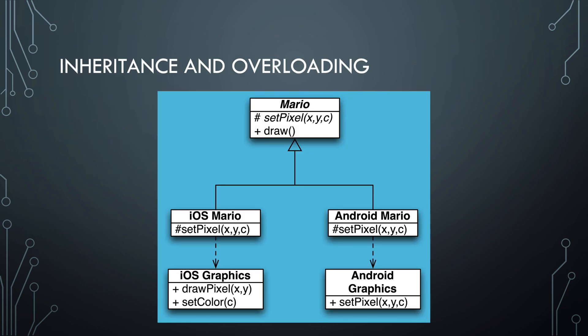Let's redesign it and solve this. In the new version, the abstract Mario class has an abstract method called setPixel. The abstract class contains the draw method that uses setPixel to draw the character onto the screen. Then iOS Mario and Android Mario each provide a version of setPixel that uses the respective platform. The setPixel method in iOS Mario calls the drawPixel method in iOS graphics, and the one in Android Mario calls the related method in Android graphics engine.